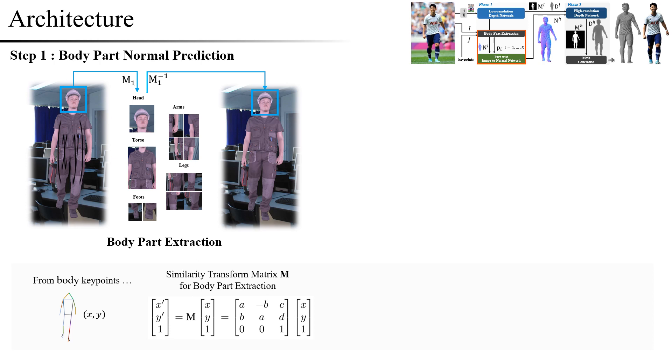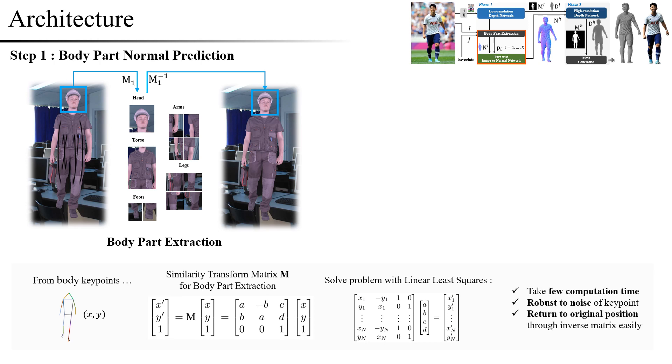to minimize the computation required to extract each part, we defined a transformation process as a similarity transform matrix. The keypoints are used to calculate the variables of the transformation matrix through linear least squares, so that the keypoints can be transformed to the predefined positions of the cropped image. This process not only requires minimal computation, but also operates very robustly even with noise in the keypoints.